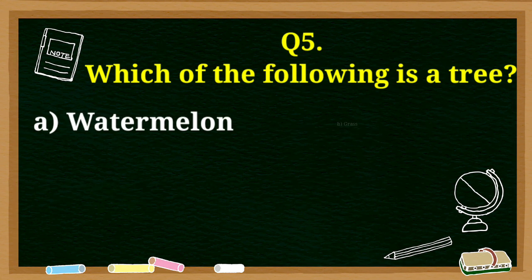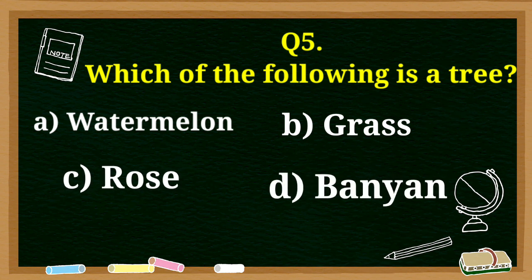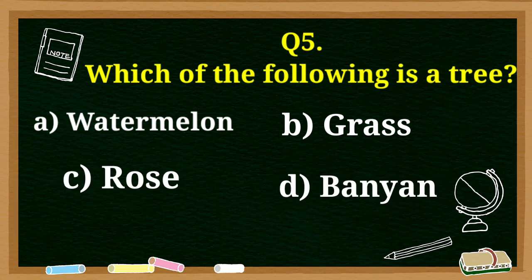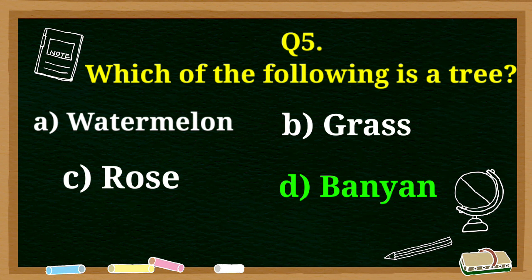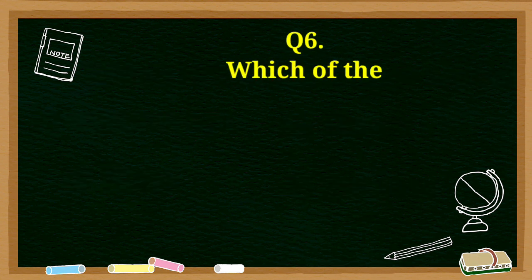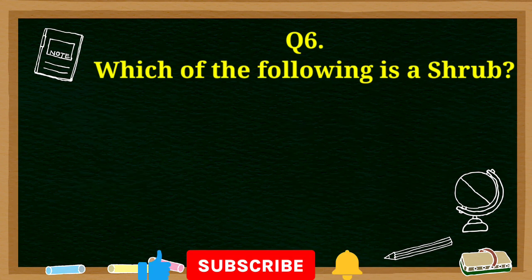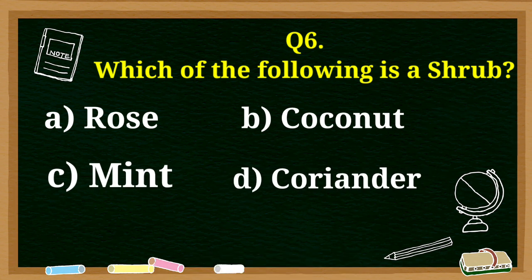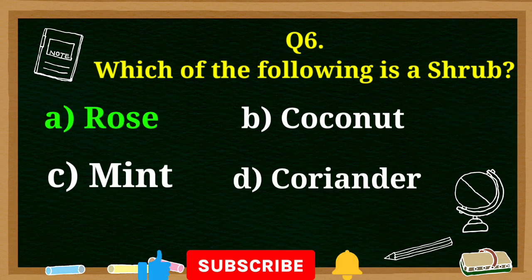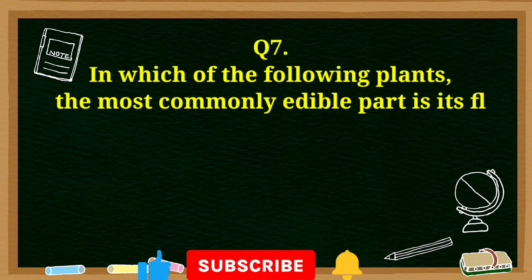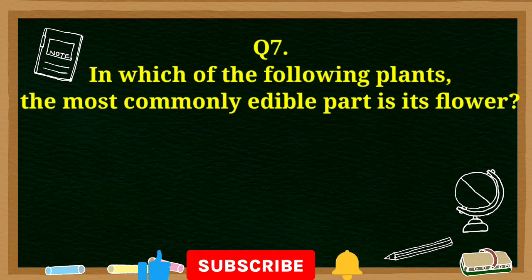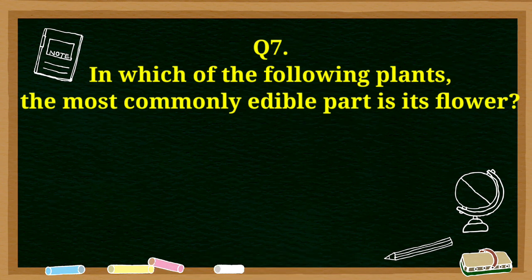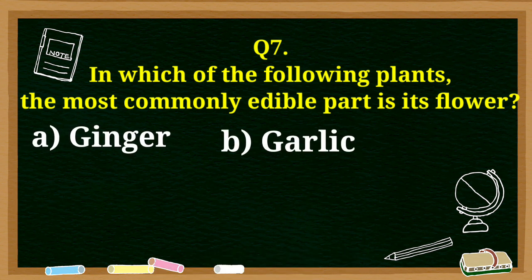Which of the following is a tree: watermelon, grass, rose, or banyan? The answer is banyan tree. Which of the following is a shrub: rose, coconut, mint, or coriander? The answer is rose.